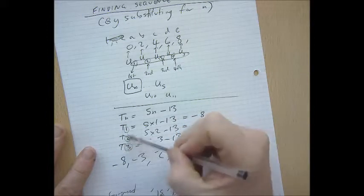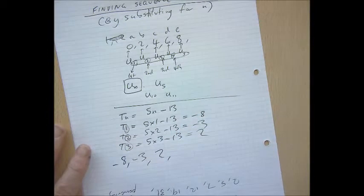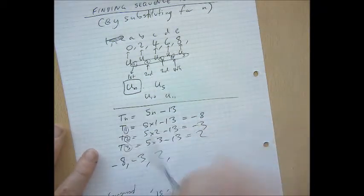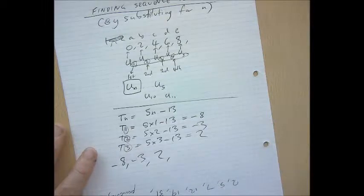These can be thought of as position numbers. So, as long as nothing strange happens, like as long as you don't start with 0, then these can just be thought of as the position.